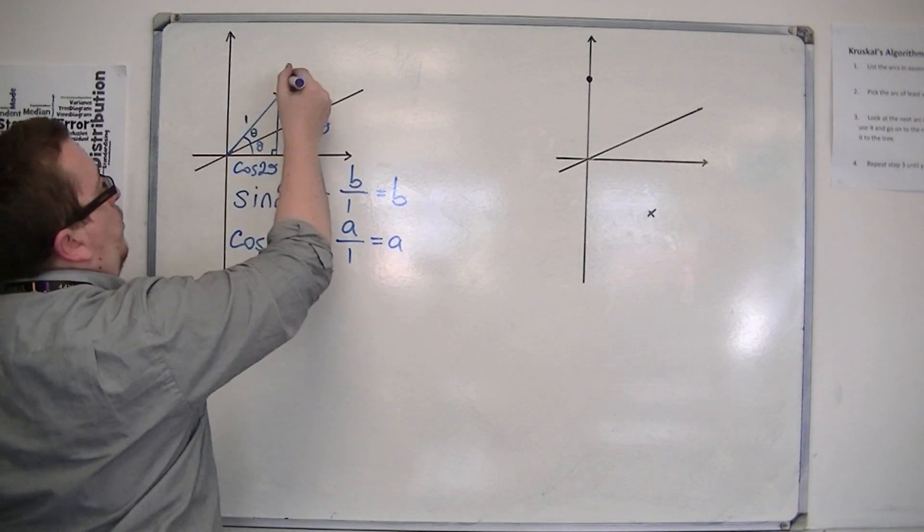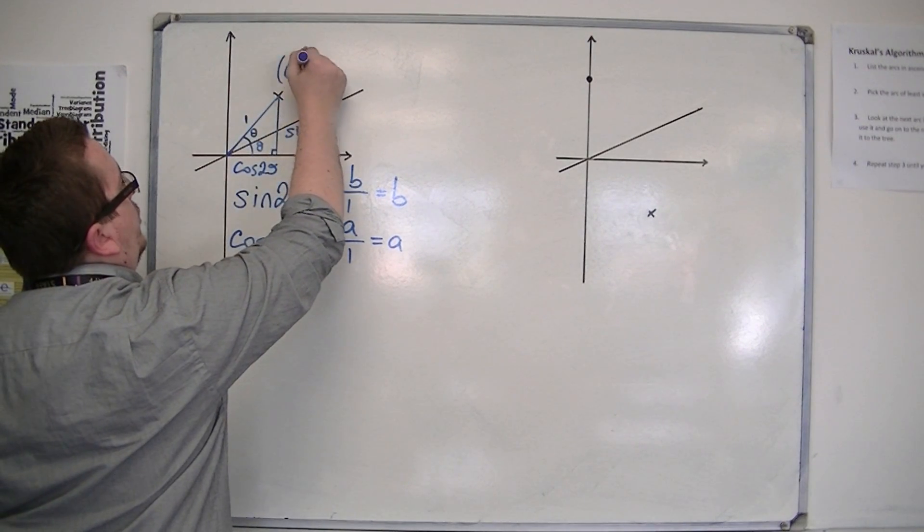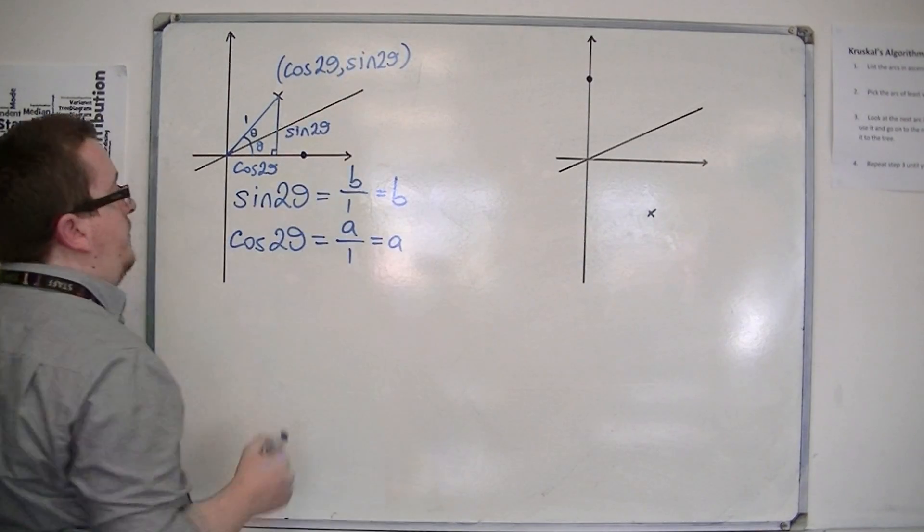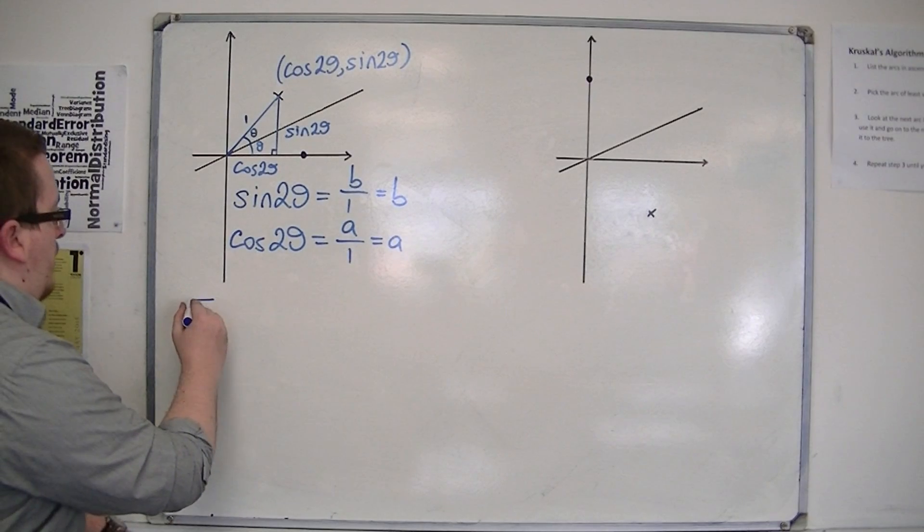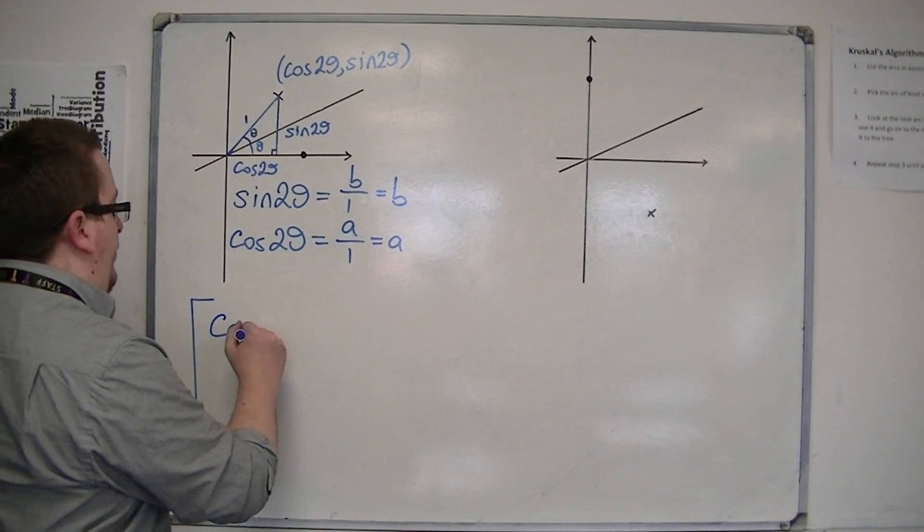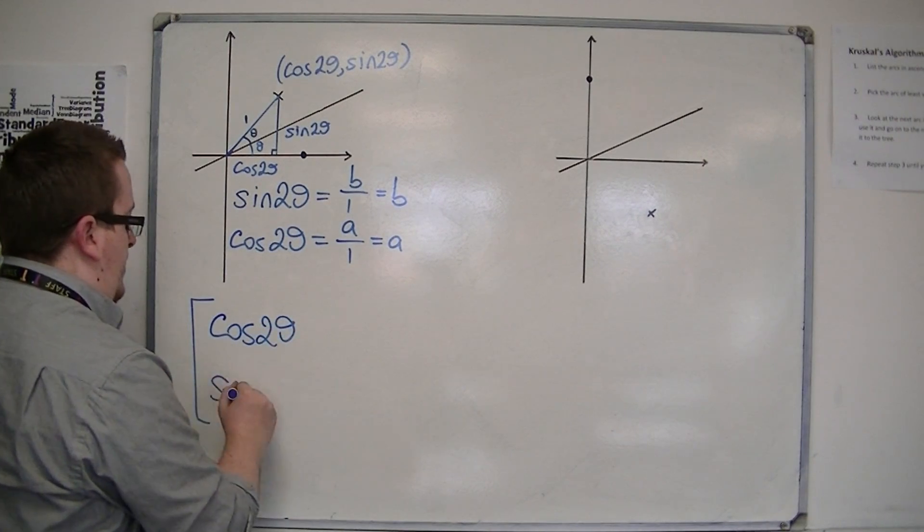And so the coordinates of this point is cos 2 theta, sine 2 theta. And so we already know the first column of my reflection matrix: cos 2 theta, sine 2 theta.